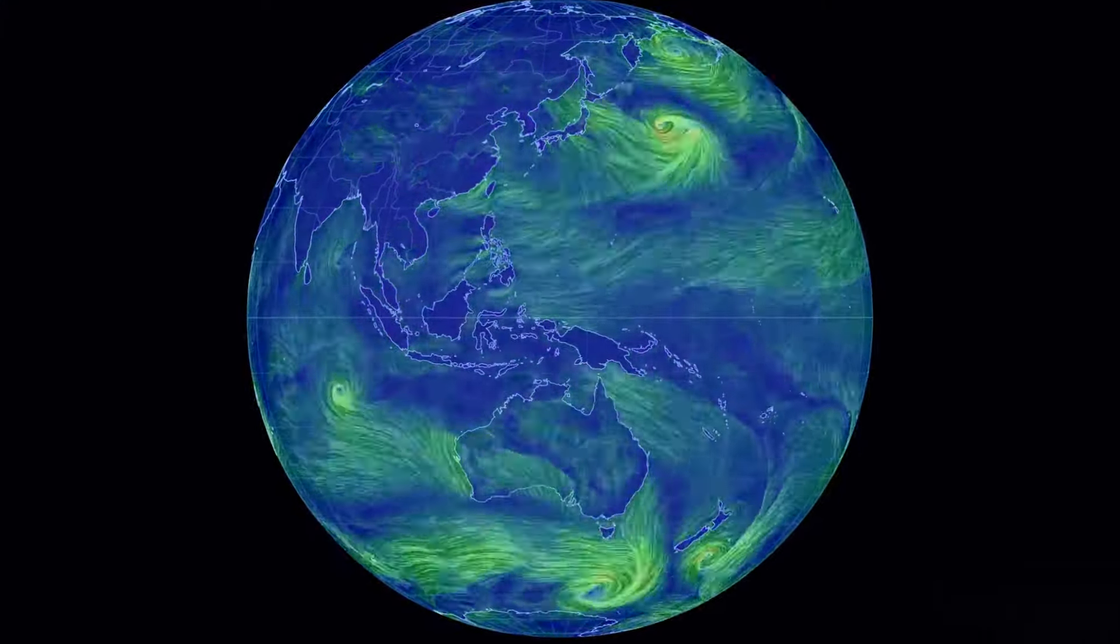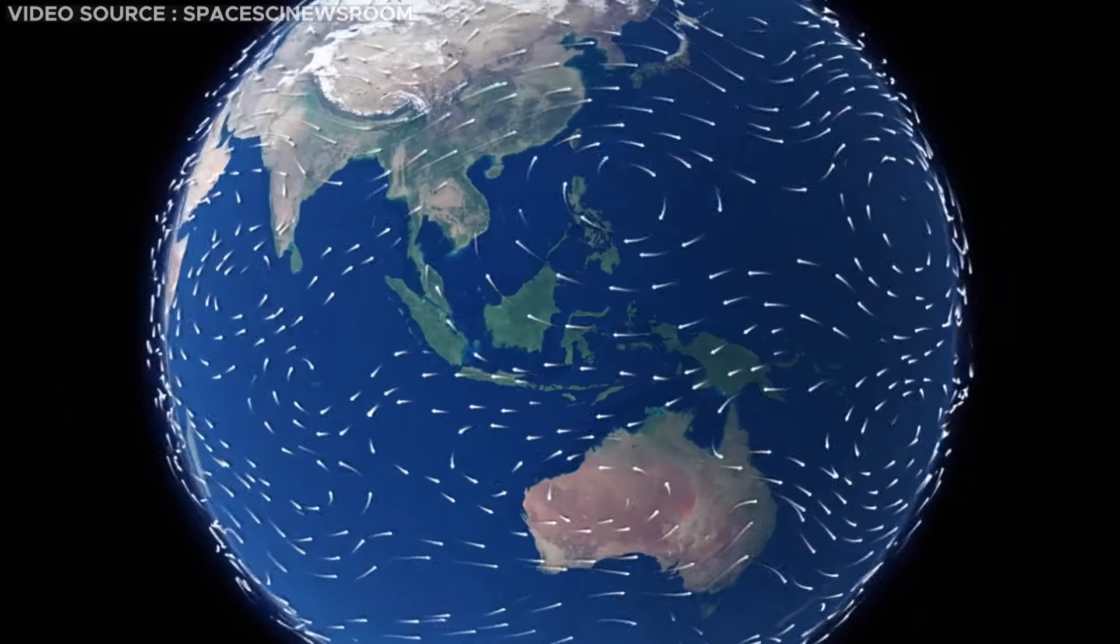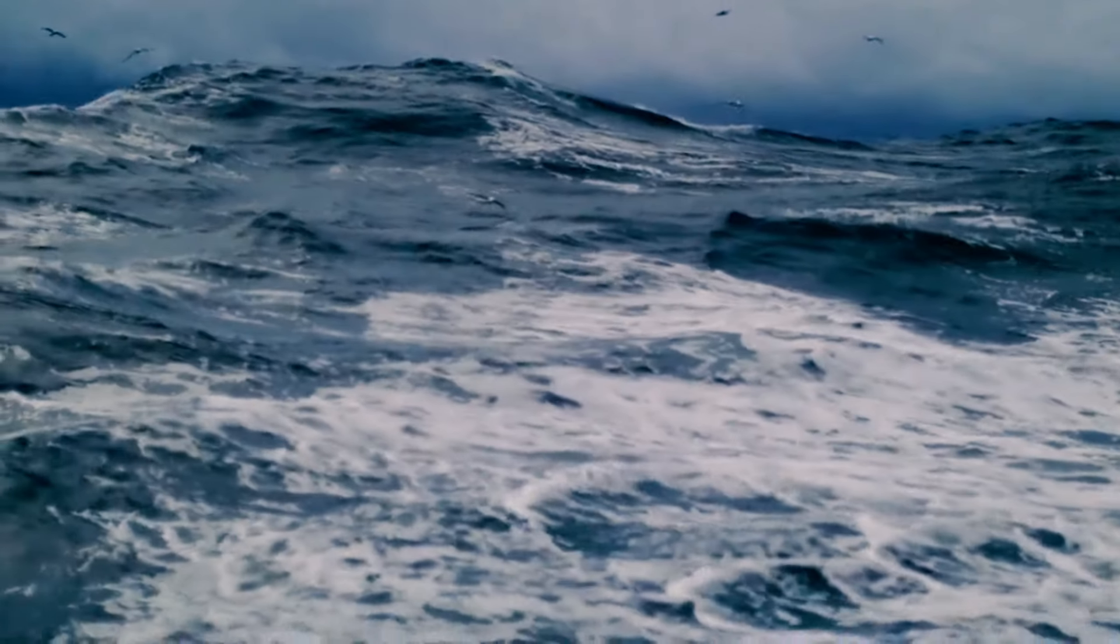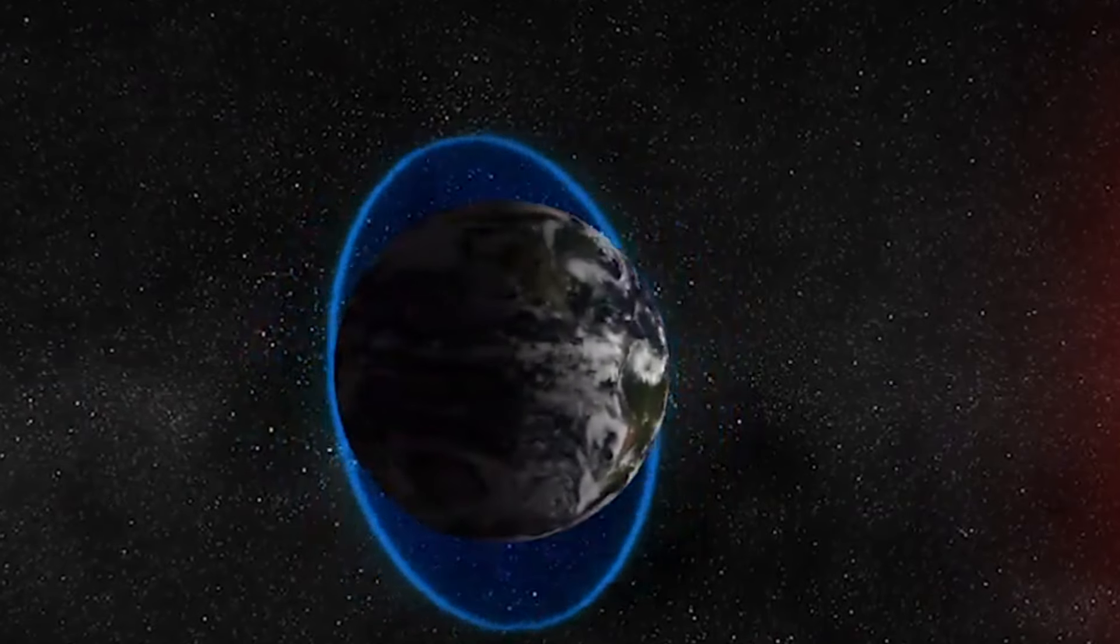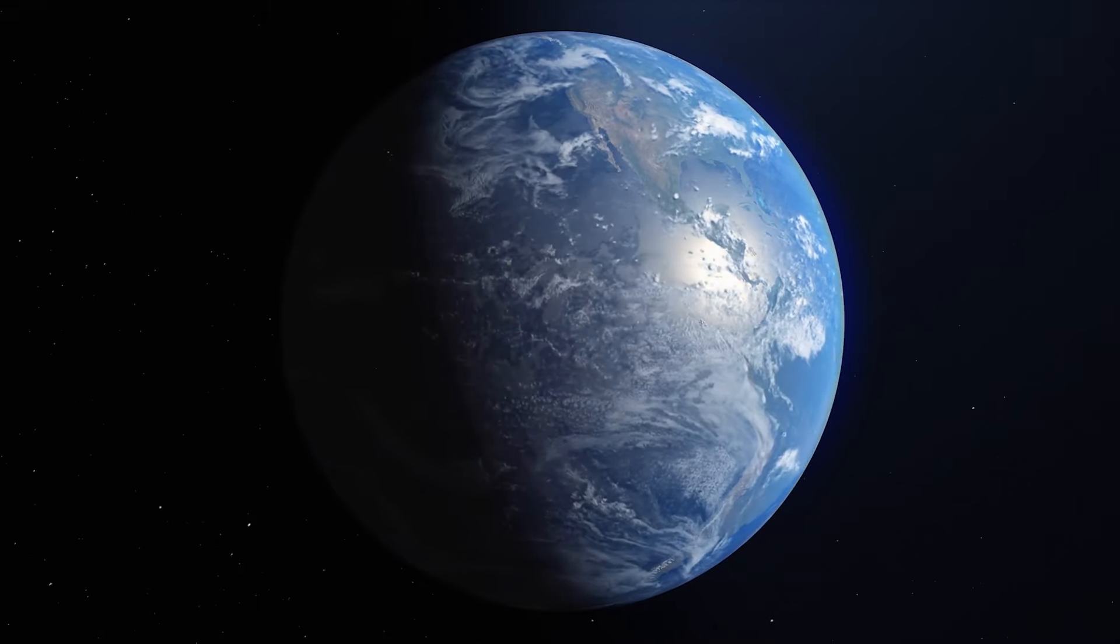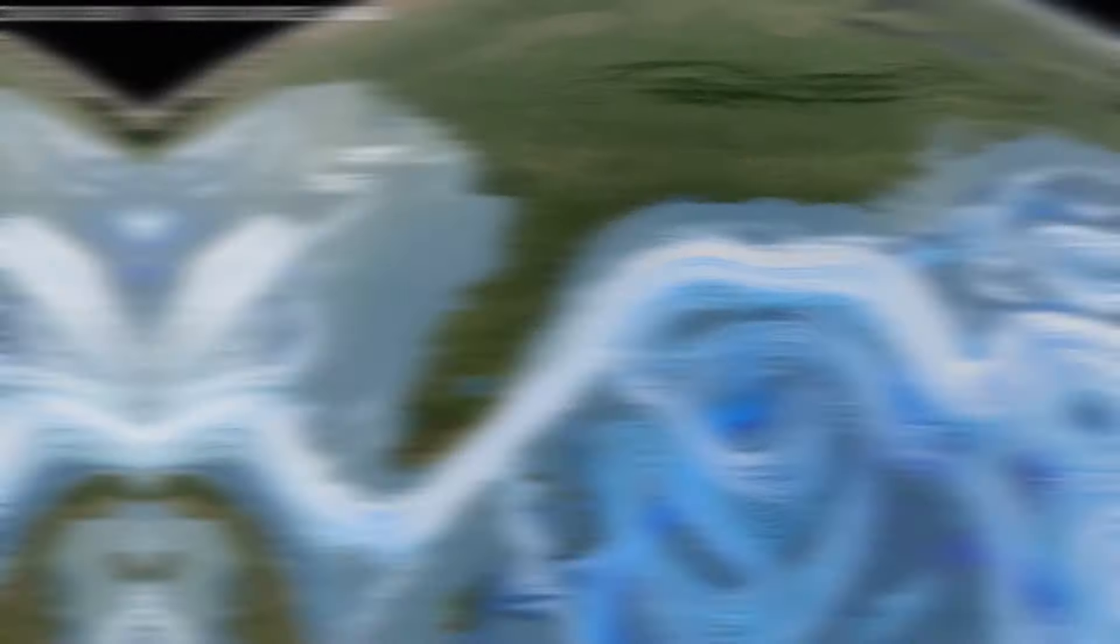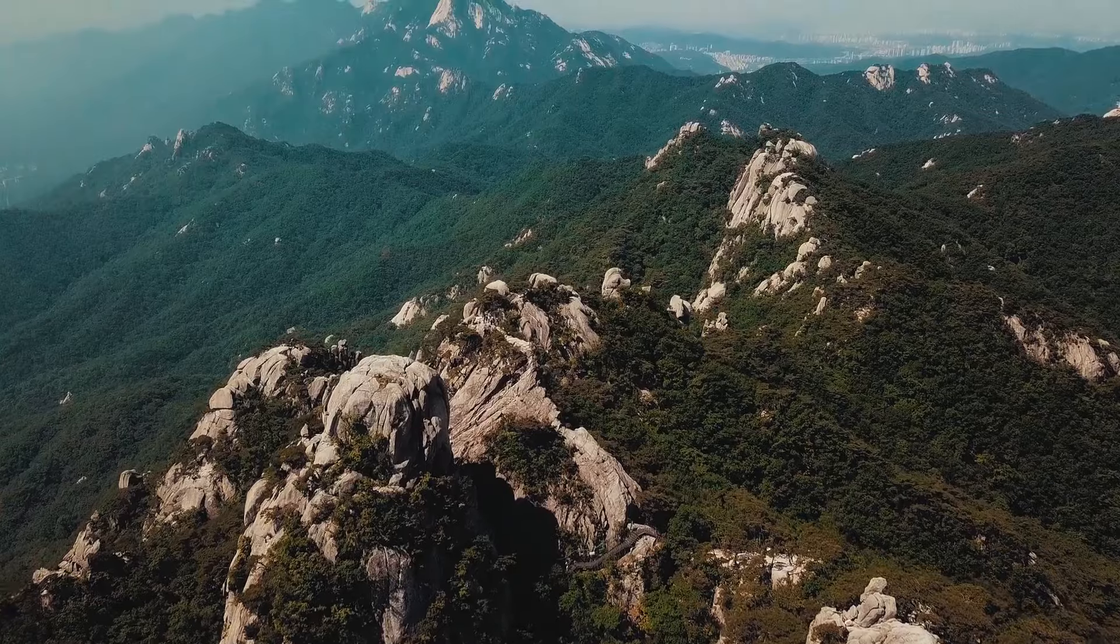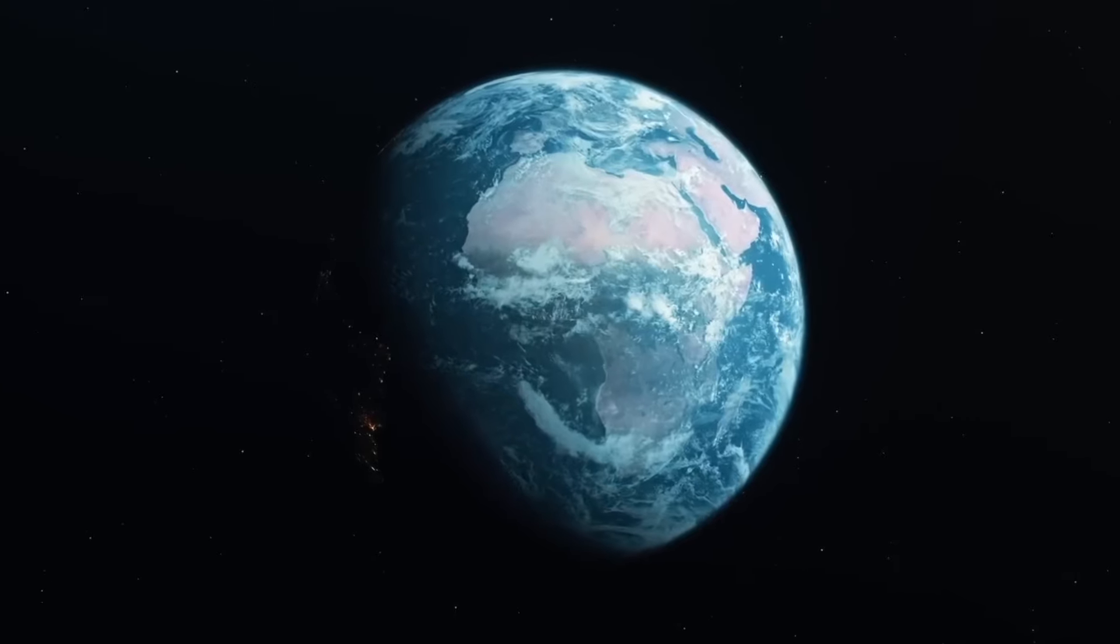Additionally, surface-level elements like wind and wave motions also play a significant role in determining the Earth's rotational speed. The wind and tidal forces that traverse the planet's surface exert influences on its rotation, contributing to the complex dynamics of Earth's rotational behavior. Friction between air currents and the Earth's surface, along with interactions with features like mountains, contributes to slight variations in the planet's rotation speed.